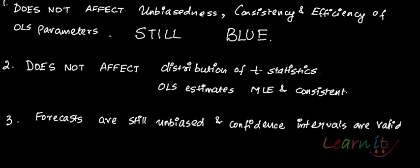So these are the good things about multicollinearity: it does not affect unbiasedness, consistency, or efficiency. It does not affect the distribution of T-statistics, and it does not affect forecasts — they are still unbiased.